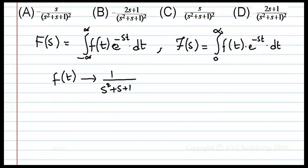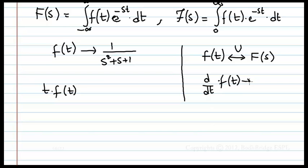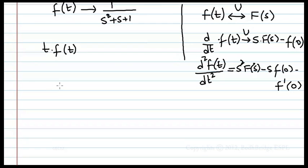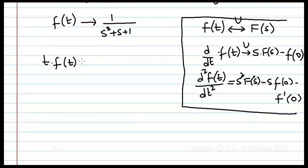He is asking what is the unilateral Laplace transform of t·f(t). Recall the properties: the unilateral Laplace transform of d/dt f(t) is s·F(s) − f(0), and d²f(t)/dt² has s²·F(s) − s·f(0) − f'(0). But here he is asking for t·f(t). For t·f(t) there is no property involving initial conditions, so directly it is the normal Laplace transform property.